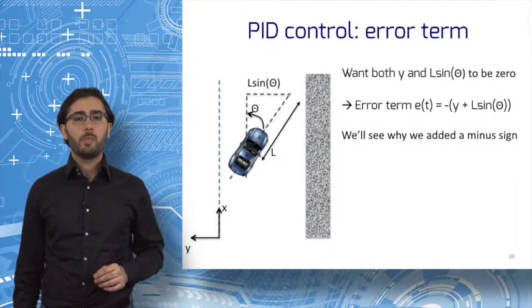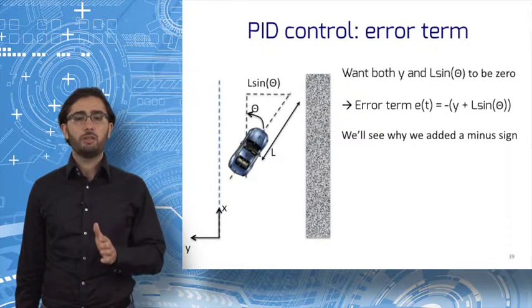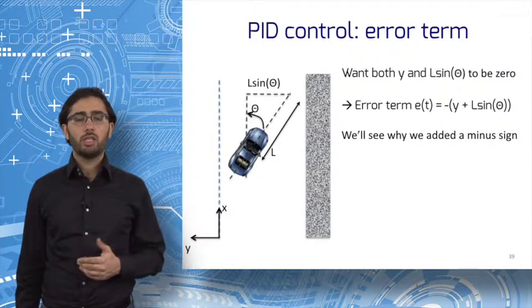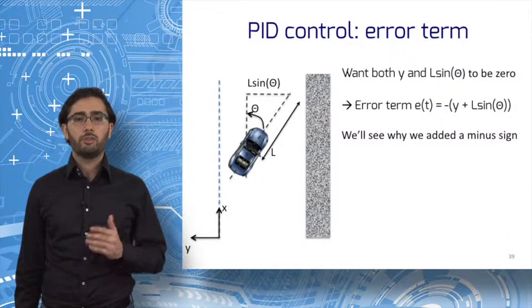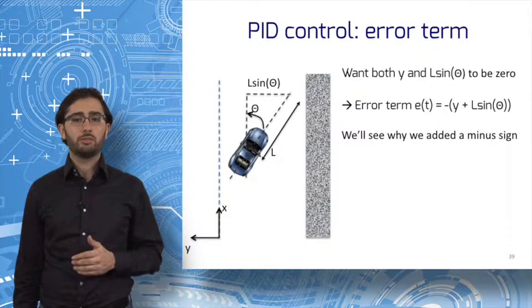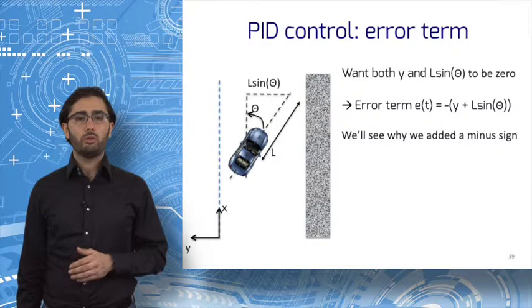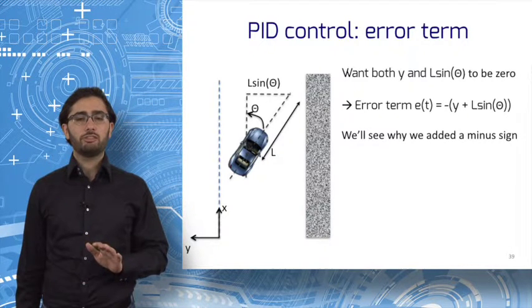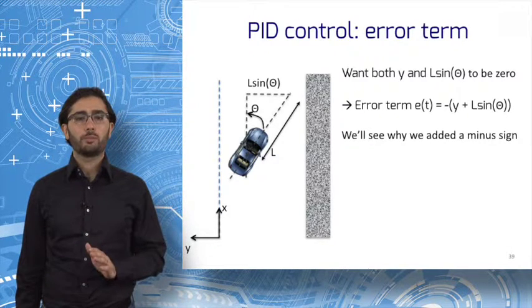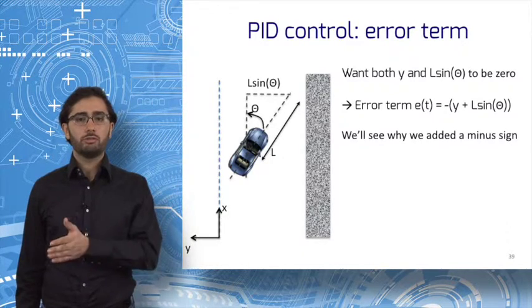The first step in PID is to define the error term. In this case, it is simply minus the sum of y, the distance from the center line, and l sine theta, the difference between the destination of driving straight and if driving at the current angle theta. This error term is zero when the car is on the center line and aligned with the walls. The reason we have a minus sign there will be clear shortly. The control objective can now be expressed as error equals to zero.